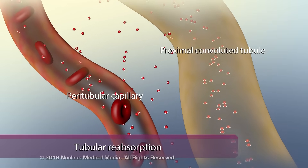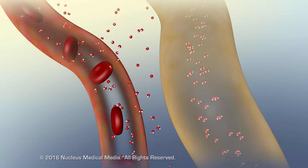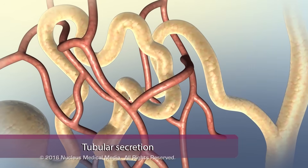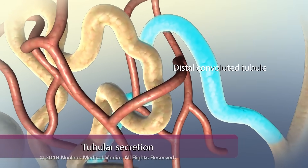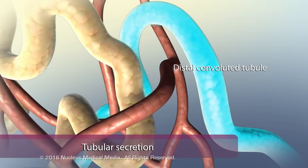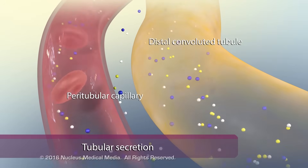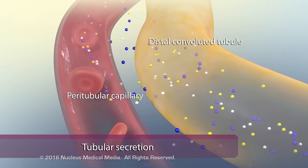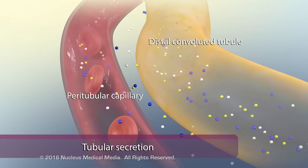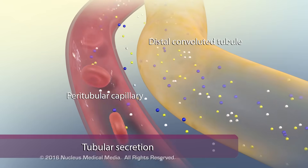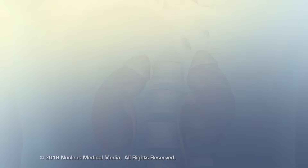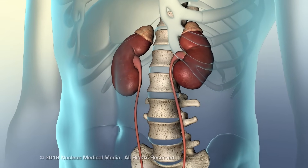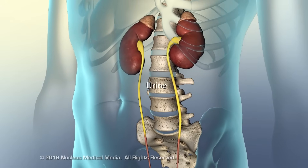The peritubular capillary reabsorbs water through osmosis. The final step of urine production is tubular secretion, which occurs primarily in the distal convoluted tubules. These tubules extract larger nitrogenous wastes, excess hydrogen ions, and excess potassium ions from the peritubular capillaries, and secrete them into the tubular fluid. From here, these wastes will continue through the urinary system until they pass out of the body in urine.